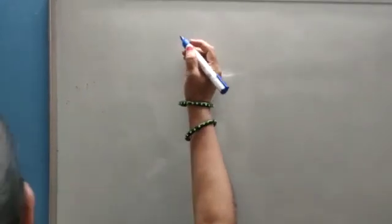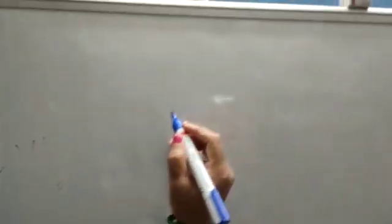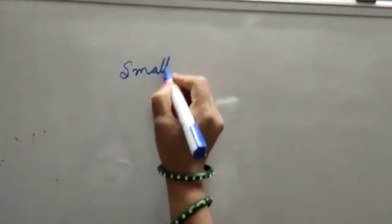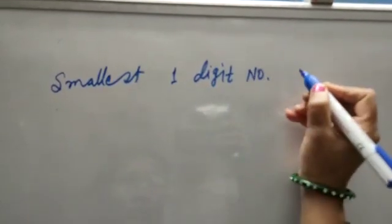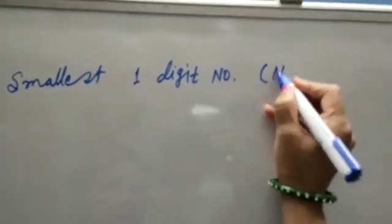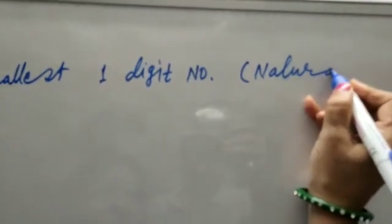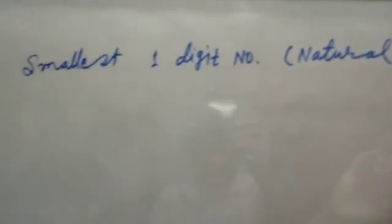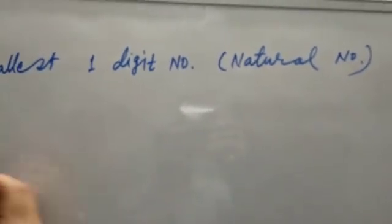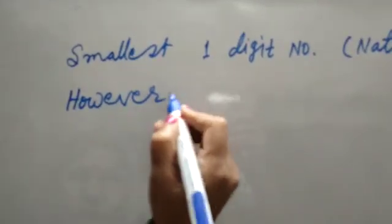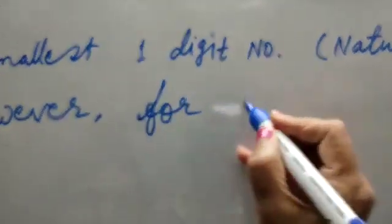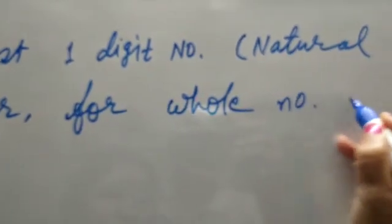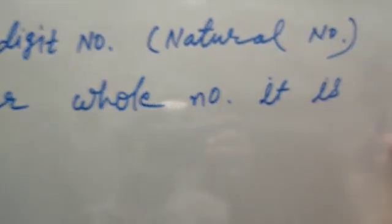Now look at here. The smallest one digit number, that is a natural number, is one. However, for whole number, it is zero.